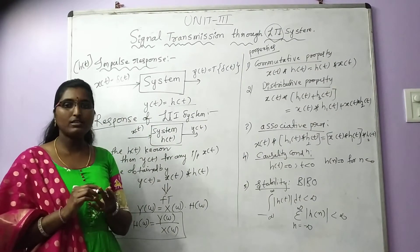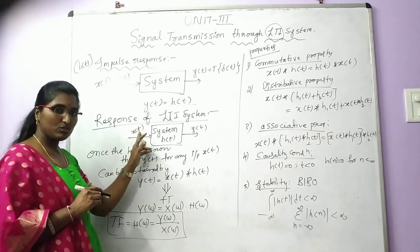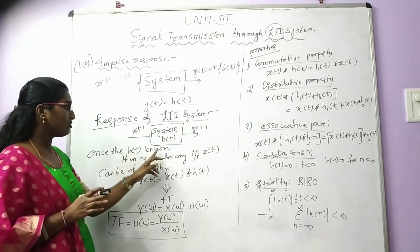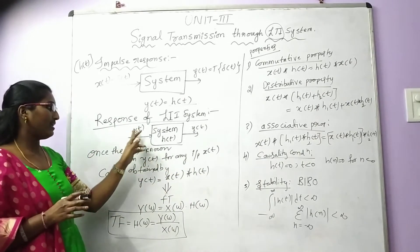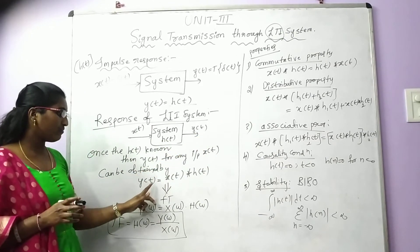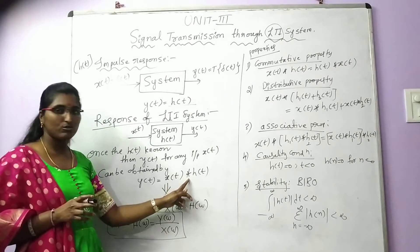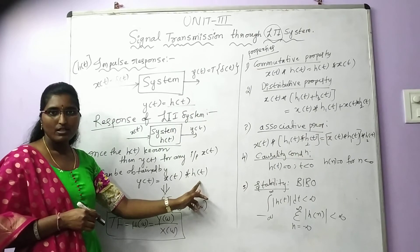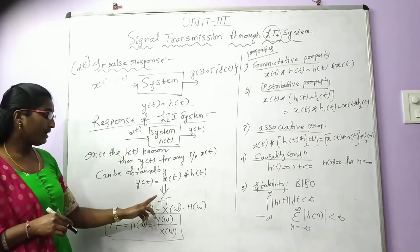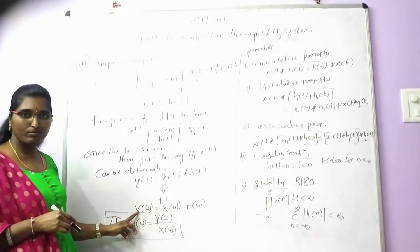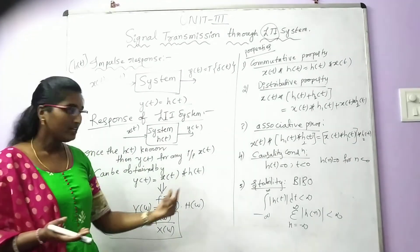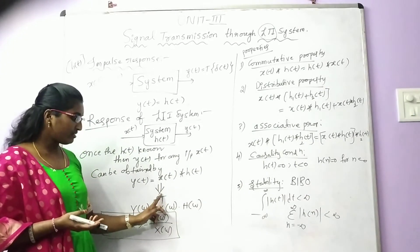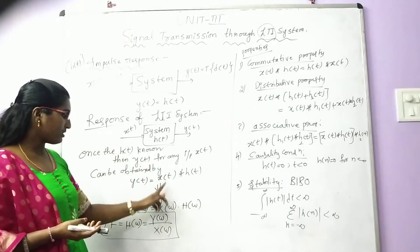The response of an LTI system gives the relation between input signal, system, and output signal. Once H(t) is known, Y(t) for any input X(t) can be written as Y(t) = X(t) * H(t) — that is, the convolution of the input signal and the impulse response. Applying the Fourier transform, convolution in the time domain becomes multiplication in the frequency domain: Y(Ω) = X(Ω) · H(Ω).